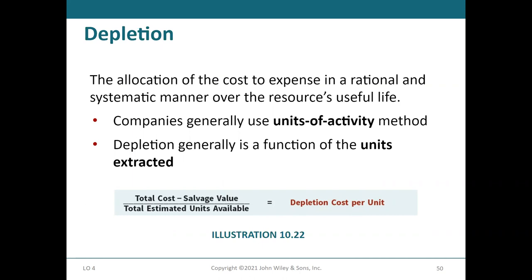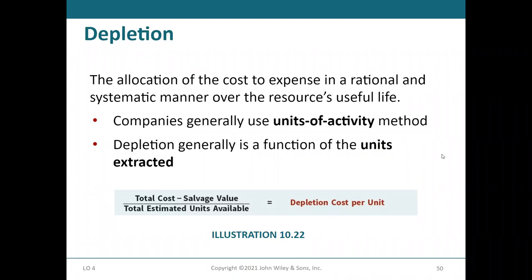For the purposes of this class, they will just be providing you with the value of the natural resource store. You take the total cost minus the salvage value — the value of the land after everything is extracted — and divide it by the number of units, whether tons of timber, ore, barrels of oil, etc. You get a cost per unit for those natural resources and then expense it as it's extracted.